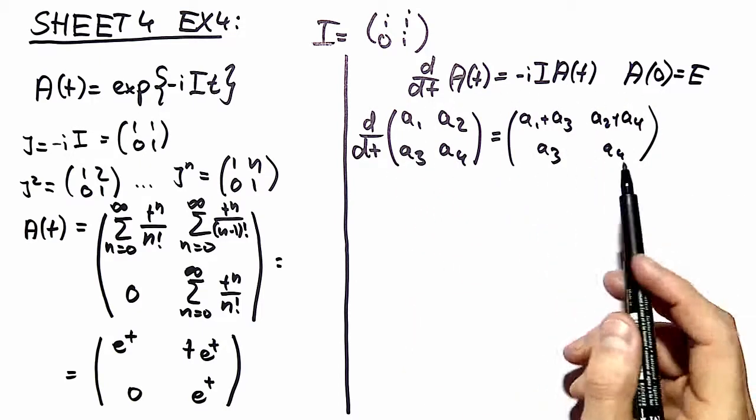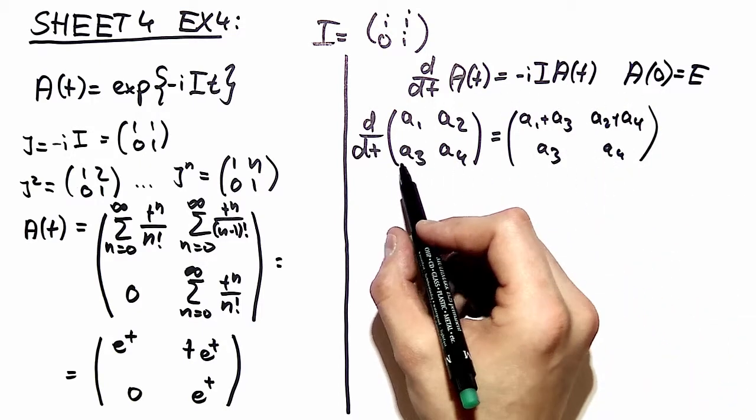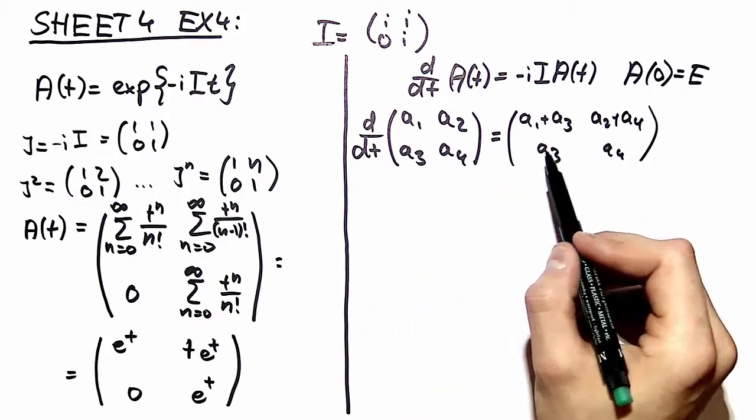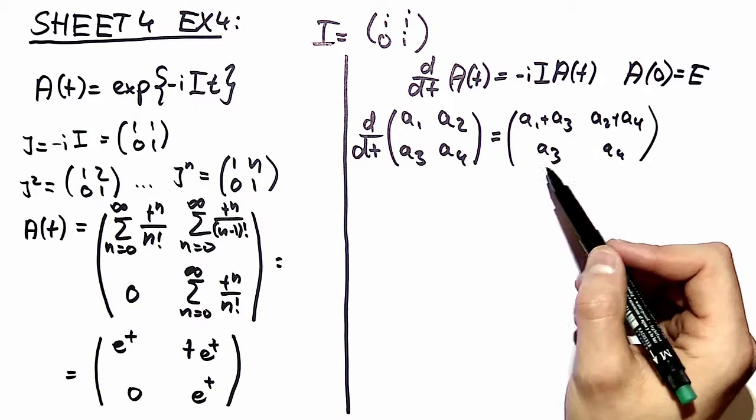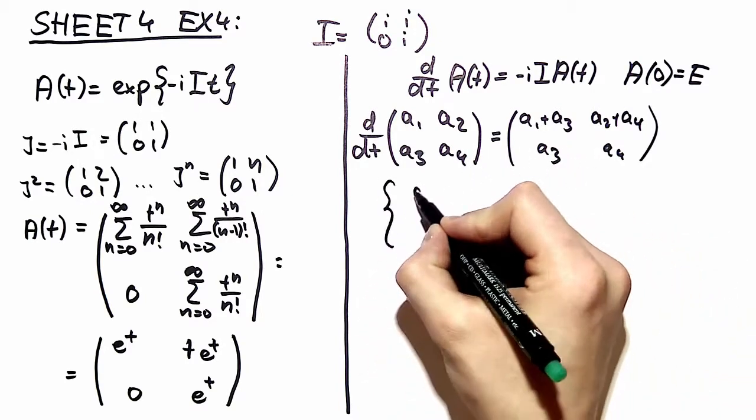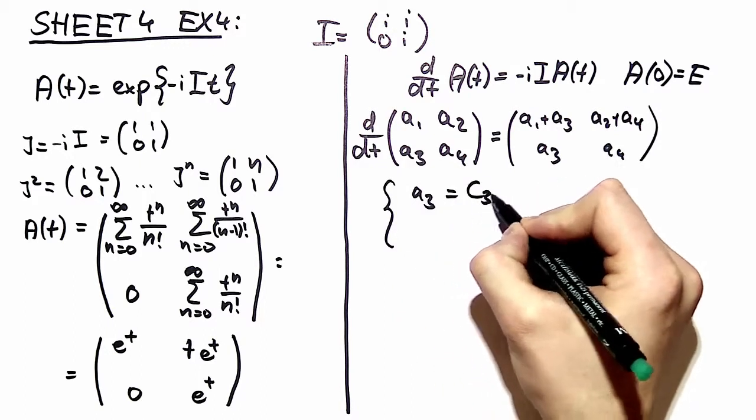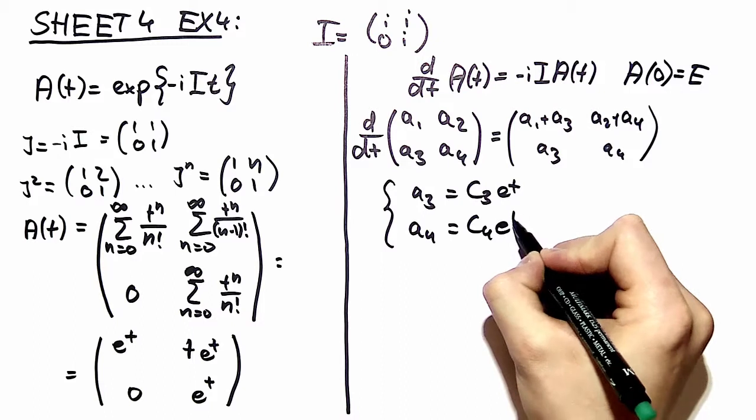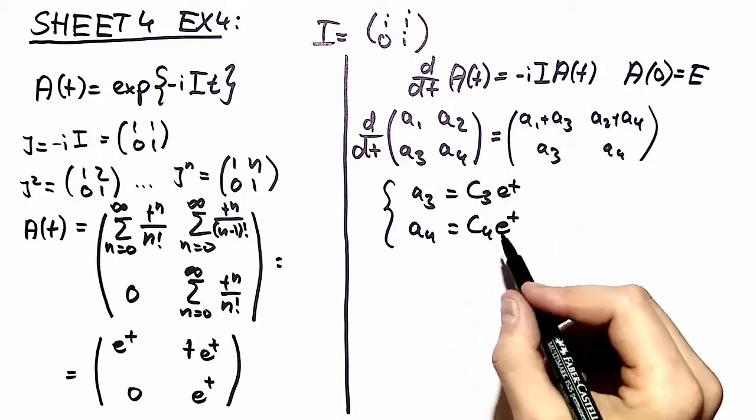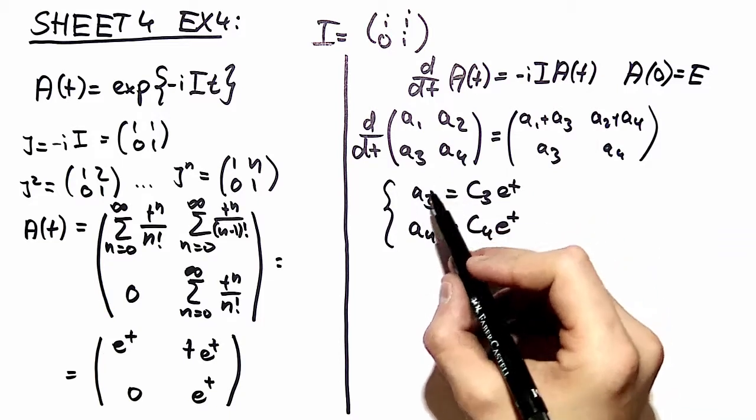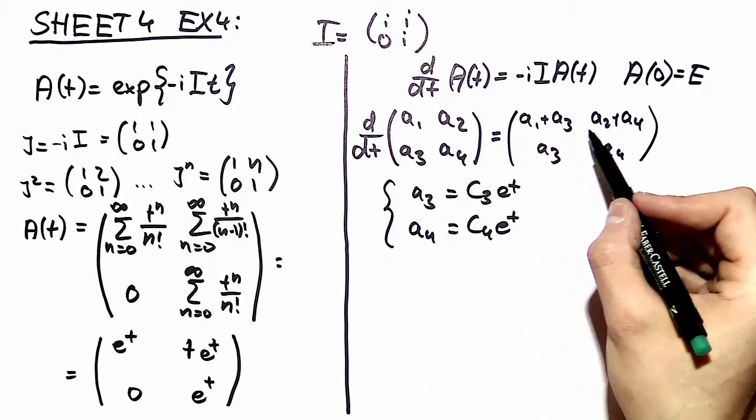The differential equations for a3 and a4 can be spotted right away. It's d/dt a3 is equal to a3. Here you can spot again your exponential function so a3 is c3 e to the t and a4 is c4 e to the t. Our c's here are constants and now we can insert our solution for a3 and a4 over here to obtain